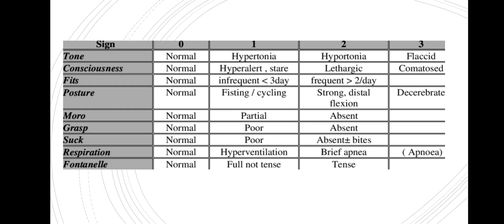When we talk about the Thompson score, there are a total of 9 parameters, which include: tone, consciousness, presence of fits, posture, Moro reflex, grasp, suck reflex, respiration, and fontanel.